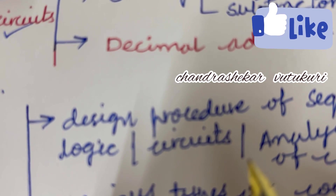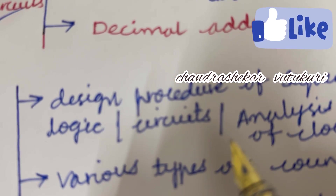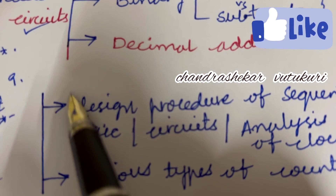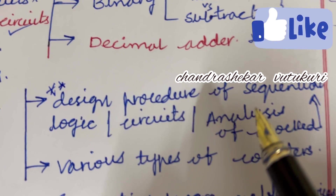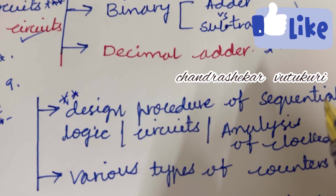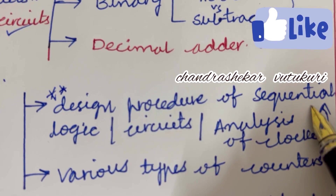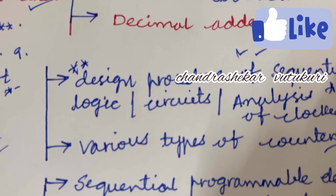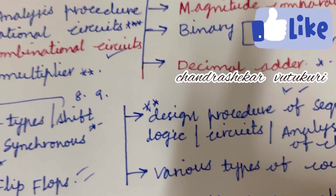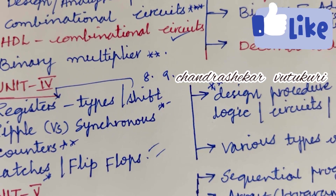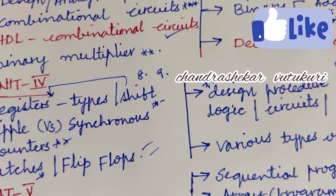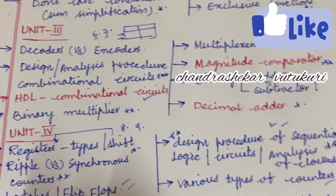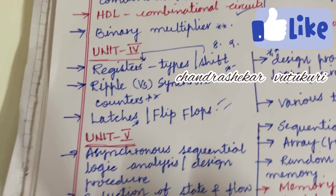Do not study bits and pieces from different units — that will not help you. If you want to score full marks, you need to be thorough with the complete unit. The gunshot question I can give you is the design procedure of a sequential logic circuit and analysis of a clocked sequential circuit, which will definitely occur in your question paper. Various types of counters may be a short question this time.